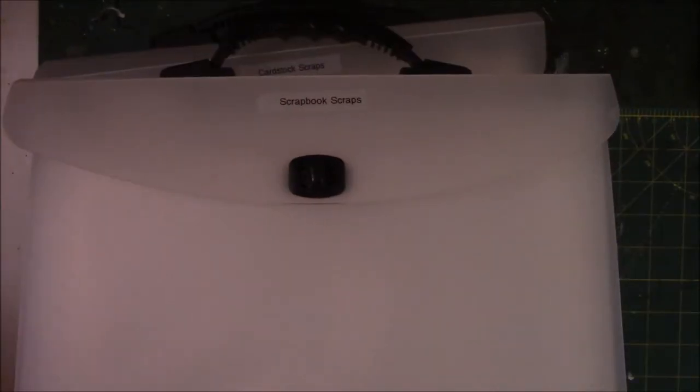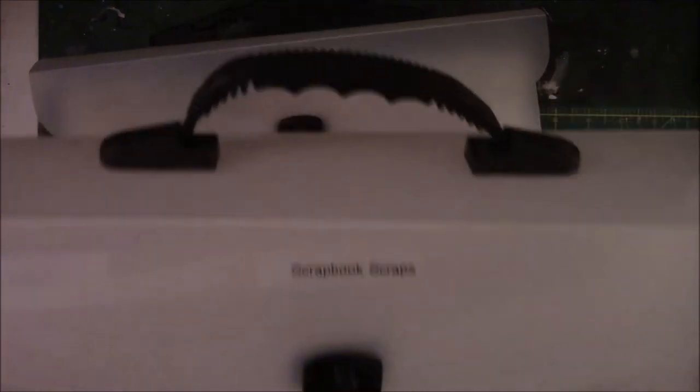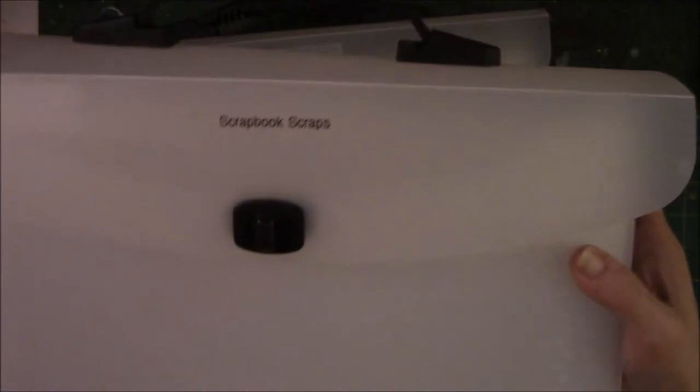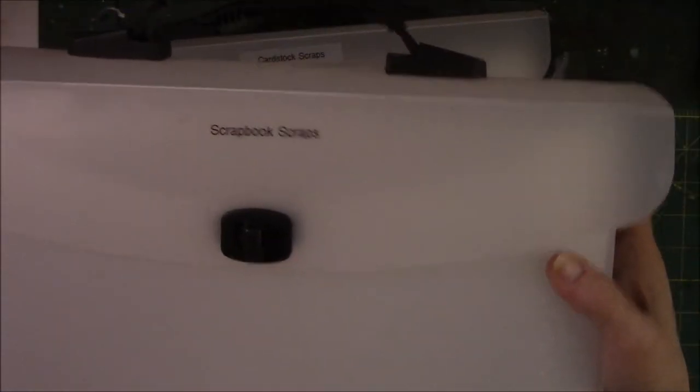All right. So let me get the other thing that I store stuff in. It's kind of bulky. So the other two ways that I store, or the same way, but two different items that I stored scraps is, I bought these 12 by 12 accordion style keepers. This one's labeled scrapbook scraps.